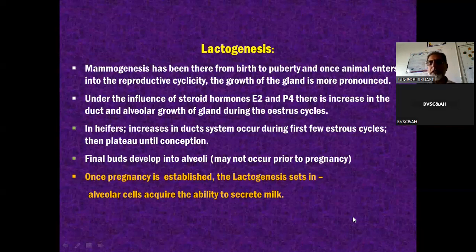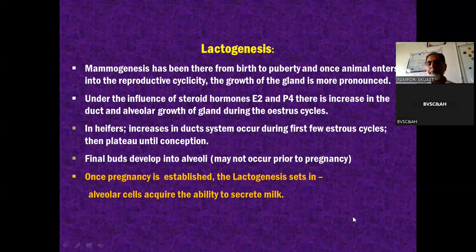So in pregnancy itself, the mammary gland's terminal ends of those ducts become alveoli, and the alveoli then gain the property or the functioning of secreting milk - synthesizing and secreting milk. That's lactogenesis.